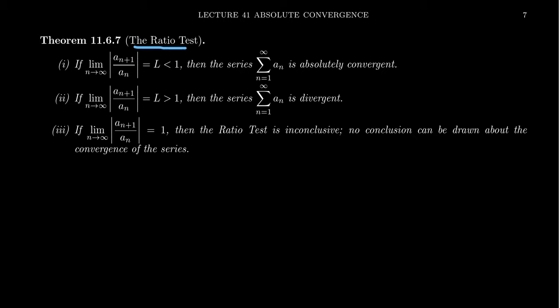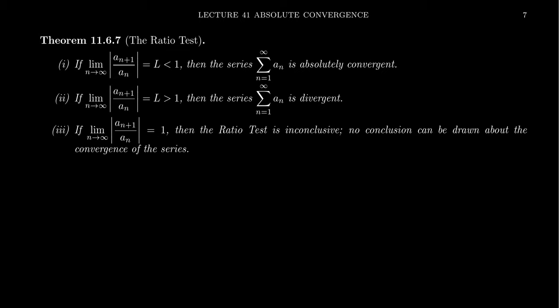The ratio test gets its name for the following reason. Consider the sequence of ratios — you have some sequence a_n, and you take the ratio of consecutive terms: take a_{n+1} and divide by a_n, and take the absolute value. Then take the limit as n goes to infinity of |a_{n+1}/a_n|. If that sequence of ratios is convergent, call its limit L. That's how the ratio test gets its name — we compute the limit of this ratio.